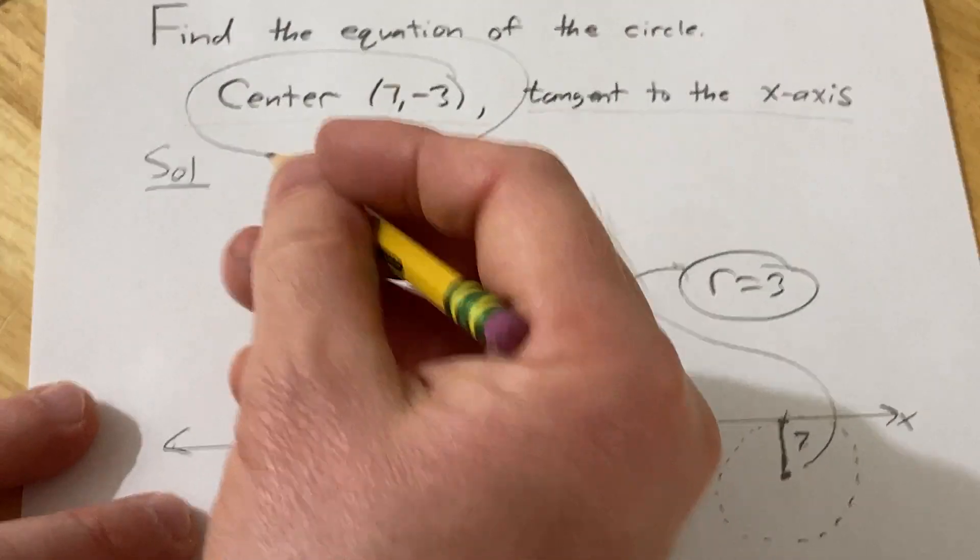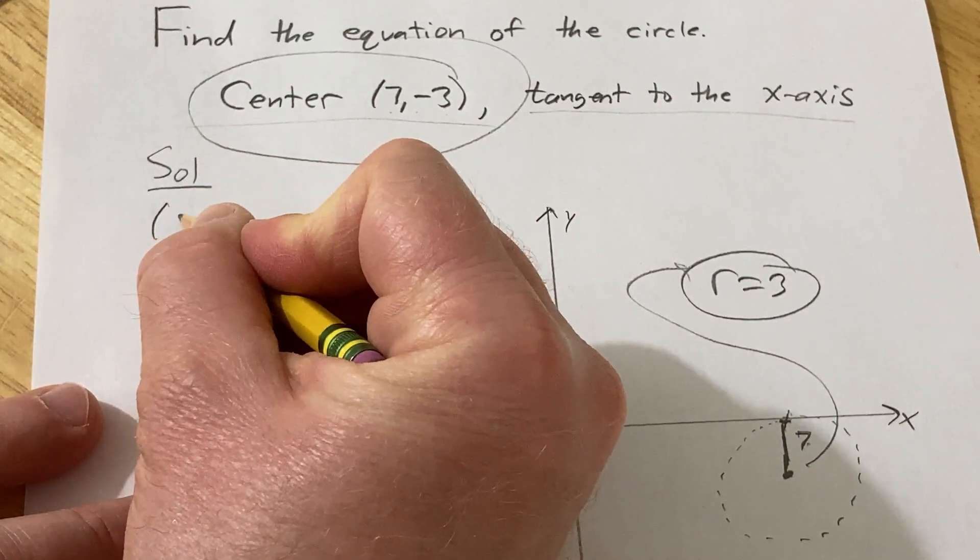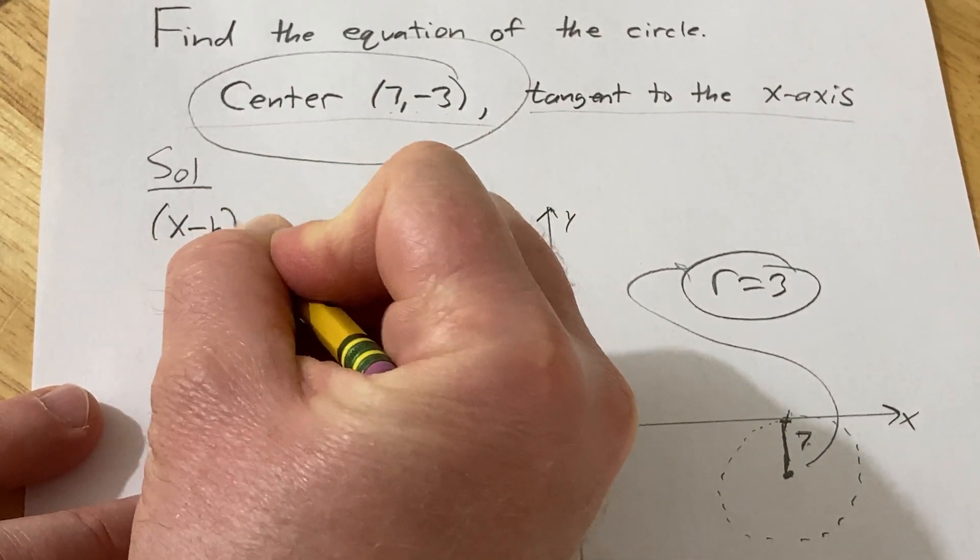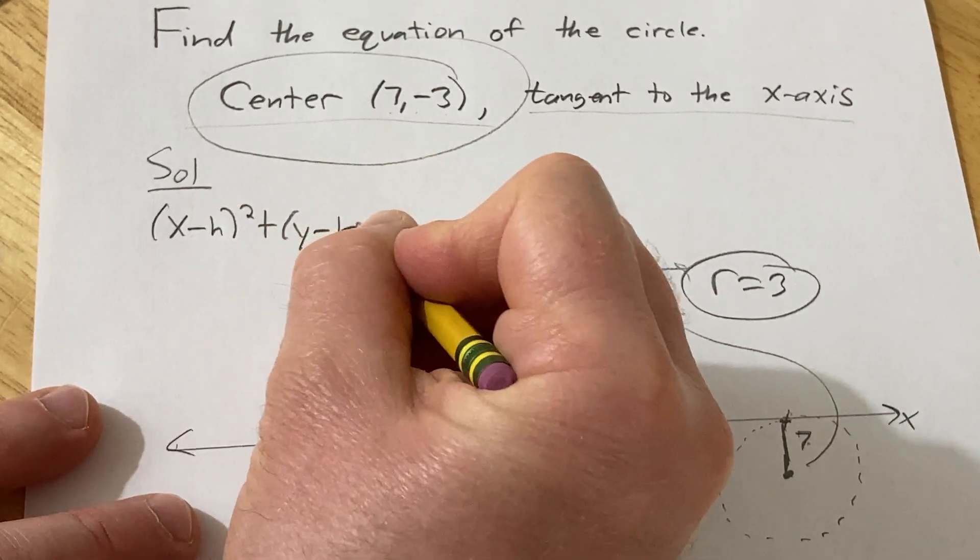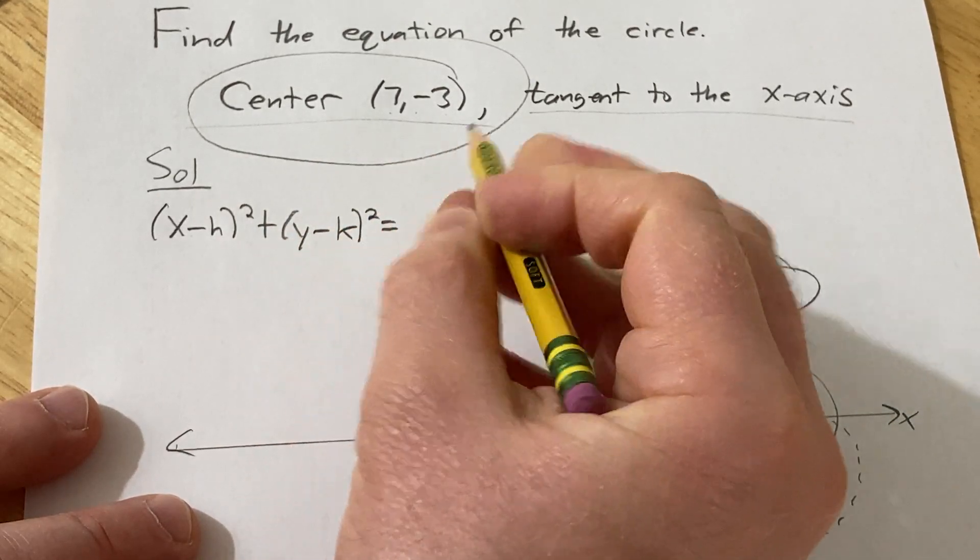Recall that the equation of a circle is given by the following formula: (x - h)² + (y - k)² = r².